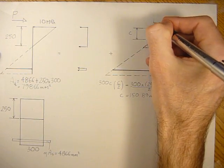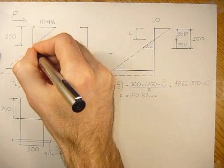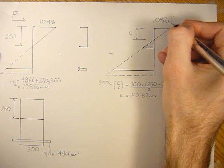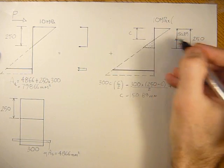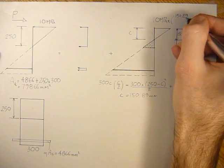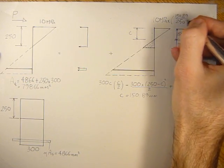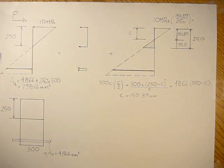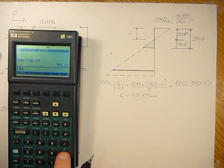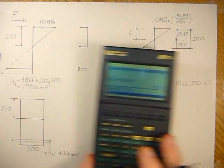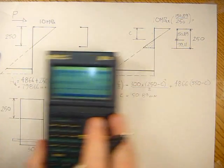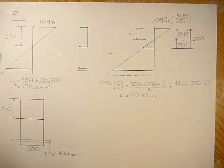So, 10 MPa, 10 minus 0, 10 MPa, times 150.89, divided by 250, is going to equal the top fibers. 10, the stress in the top fibers, 10 times 150.89, divided by 250, that comes out to 6.04 MPa.